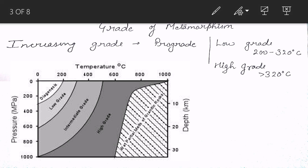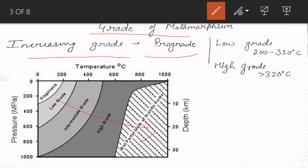Before moving to types, we can understand grades of metamorphism. There are two main grades: prograde and retrograde. If there is an increasing grade from lower to higher, this is called prograde or progressive metamorphism. For low grade, temperature is around 200–320°C — below that is diagenesis. For high grade, anything above 320°C, especially at higher pressure, falls into the higher grade region.